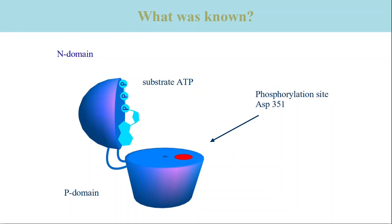It is very interesting that taking away single interactions has such a strong influence on the conformational change induced by nucleotide binding. At the time of these measurements, it was known that a conformational change is needed to deliver the gamma phosphate of ATP to the phosphorylation site. Without nucleotide, the conformation is open.